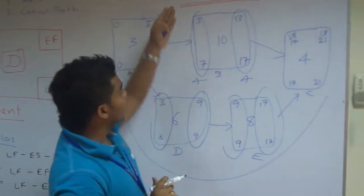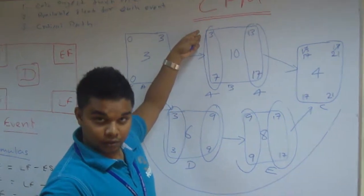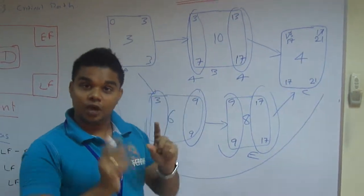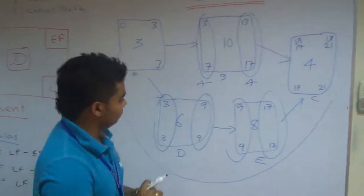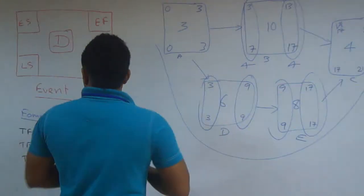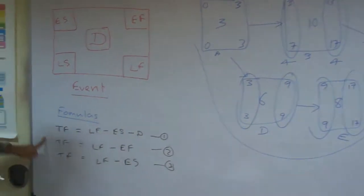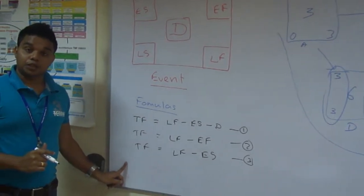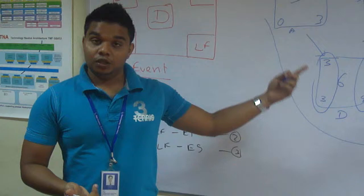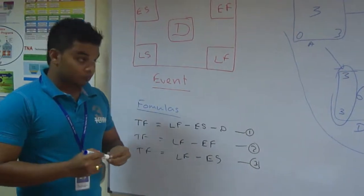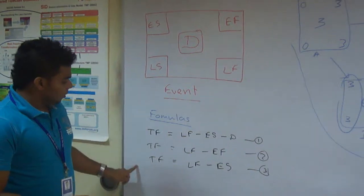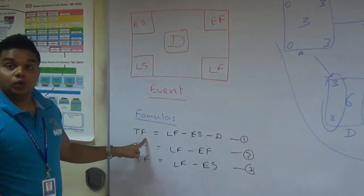That means you can start this event at third day or you can start it at seven. You have four days of a float. Now remember. These formulas are very important when you are sitting for the PMP exam. You will be asked to calculate the float available for an event or the whole project.